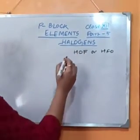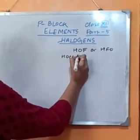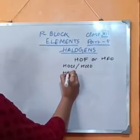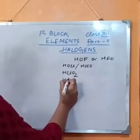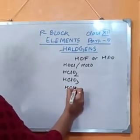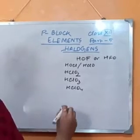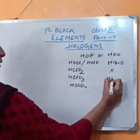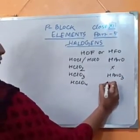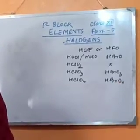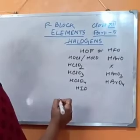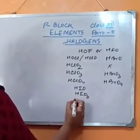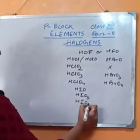Chlorine forms a range of oxoacids: hypochlorous acid, chlorous acid, chloric acid, and perchloric acid. Bromine forms hypobromous acid; it does not form bromous acid, but forms bromic acid and perbromic acid. Iodine forms hypoiodous acid, iodic acid, and periodic acid.